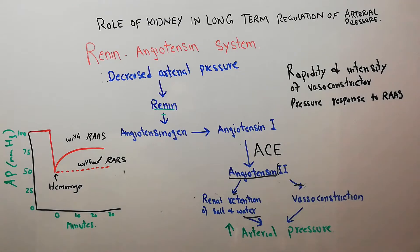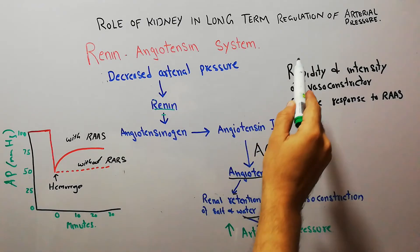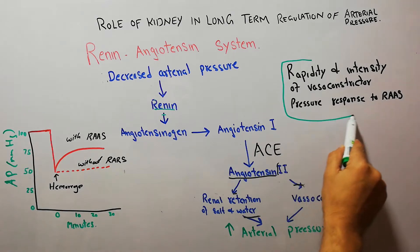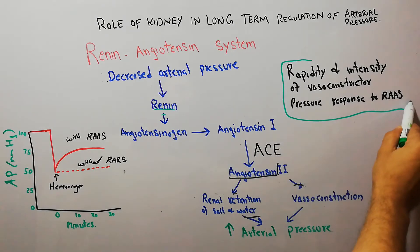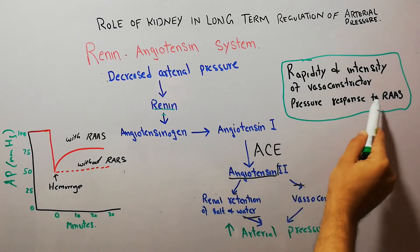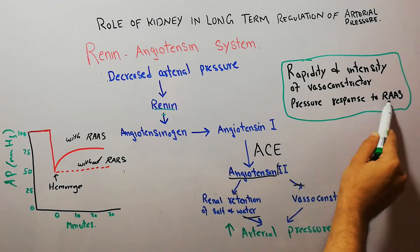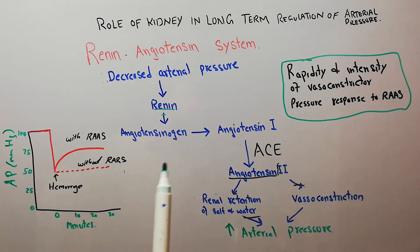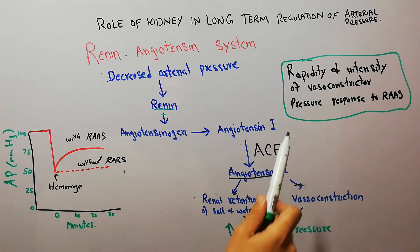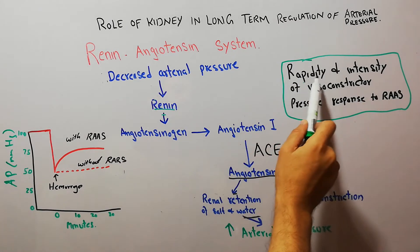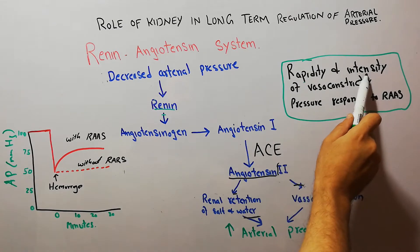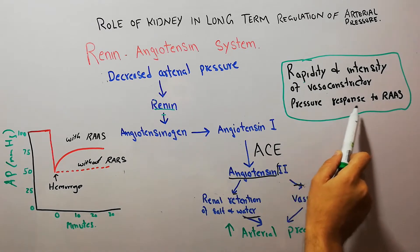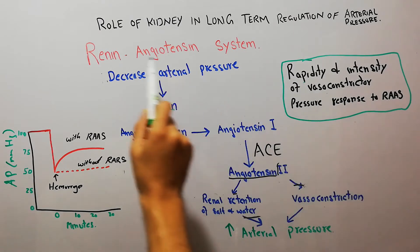Today in this lecture we are going to discuss the rapidity and intensity of vasoconstrictor response to the renin-angiotensin system — in simple words, how rapidly and how intensely the vasoconstrictor response occurs to RAS.